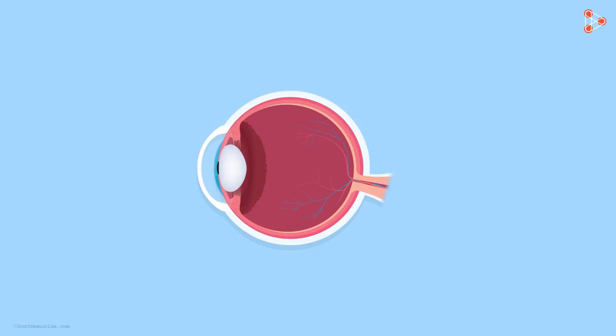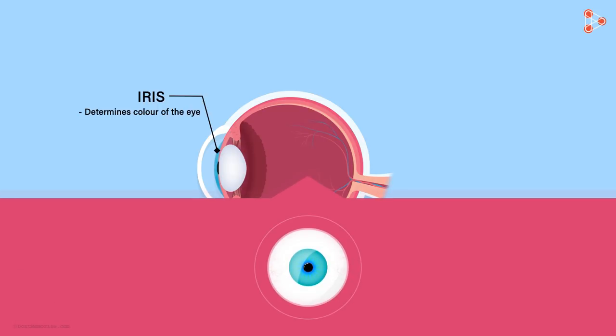Behind the cornea, there's a dark muscular structure called the iris. Iris determines the color of the eye. For instance, when we say that a person has blue eyes, it means that the color of the iris of the person's eye is blue.